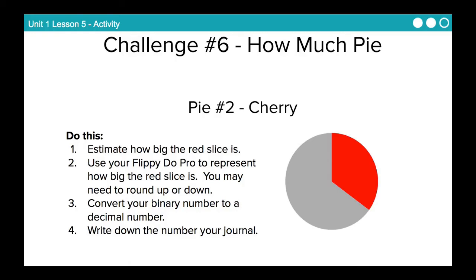So, pie number 2 is cherry. Again, same thing. Estimate how big this slice is. Use your Flippy-Doo Pro to represent how big the red slice is. And keep in mind, you may need to round up or down. Convert your binary number to a decimal number. And write down the number in your journal.